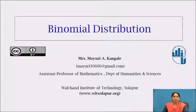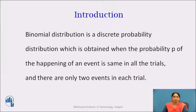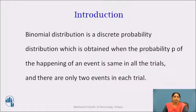Today we are going to see binomial distribution. The learning outcome is, at the end of this session, the students will be able to solve the examples of binomial distribution. The binomial distribution is a discrete probability distribution which is obtained when the probability p of happening of an event is same in all the trials and there are only two events in each trial.